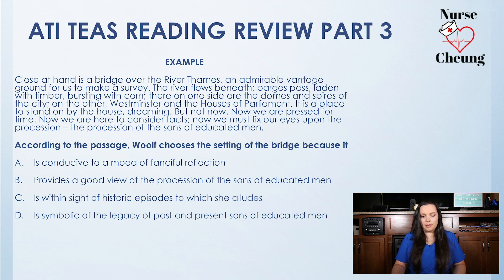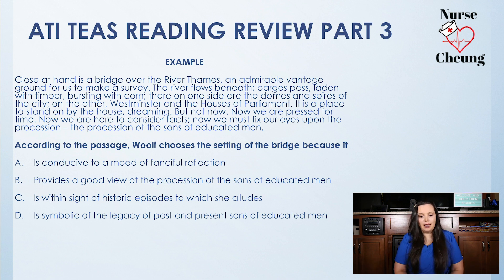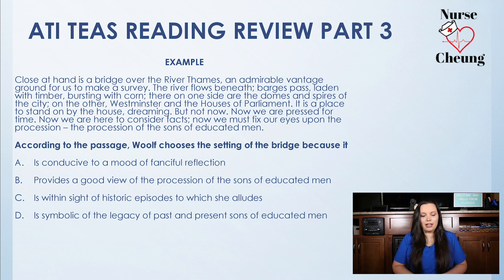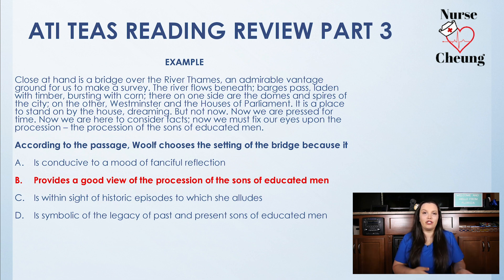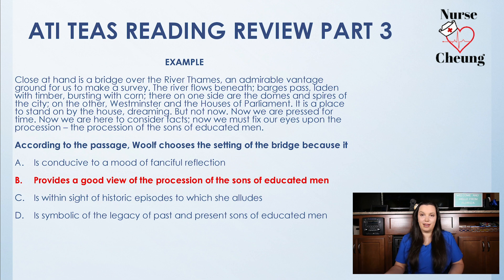'Now we must fix our eyes upon the procession of the sons of educated men.' According to the passage, Woolf chooses the setting of the bridge because it: A) is conducive to a mood of fanciful reflection; B) provides a good view of the procession of the sons of educated men; C) is within sight of historic episodes to which she alludes; or D) is symbolic of the legacy of the past and present sons of educated men. The correct answer is B. Normally we'd be on the bridge dreaming, but now we have to fix our eyes on the procession of the sons of educated men.